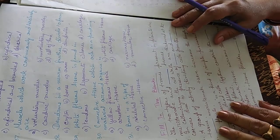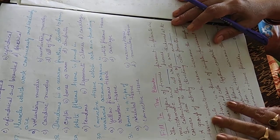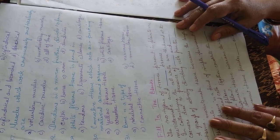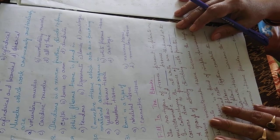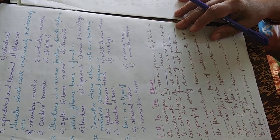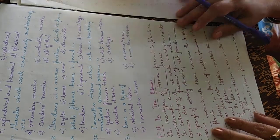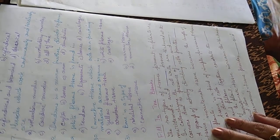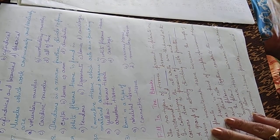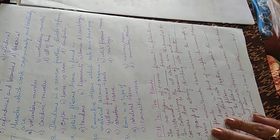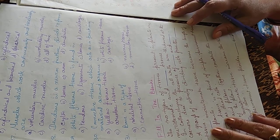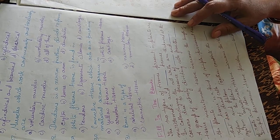Twenty-sixth question: cardiac muscles are spindle-shaped, cylindrical, cylindrical and branched, or spherical. The answer is C — cylindrical and branched.